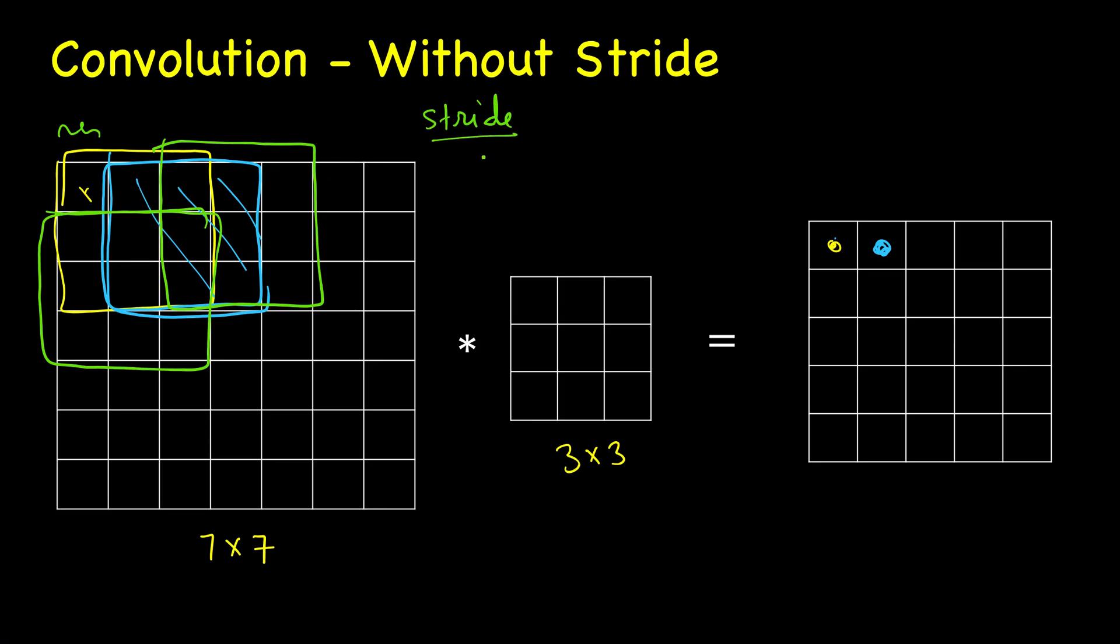This step size we call stride - the amount by which we move the filter both horizontally and vertically. This can be very computationally expensive if it's a very large image.